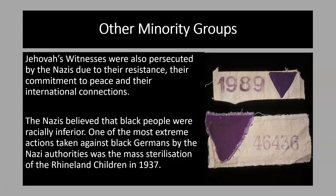The Nazis also persecuted Black people. One of the most extreme actions was the mass sterilization of the Rhineland children in 1937. The Rhineland children were around 600 to 800 children born to German women and Black French soldiers who had occupied the Rhineland after Germany's defeat in the First World War. They were seen as a threat to the Aryan race due to their mixed heritage, and about 385 of these children were secretly sterilized.